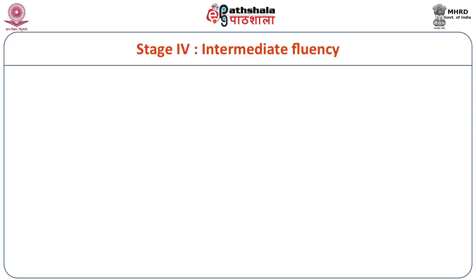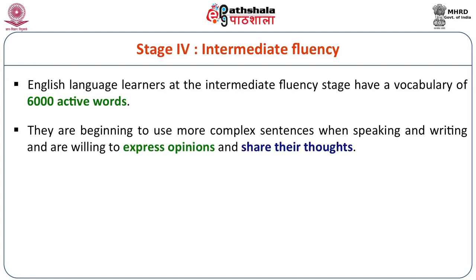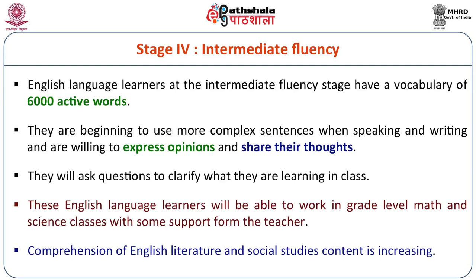Stage four is intermediate fluency. We judge any speaker on the parameters of fluency — how fluent the speaker is. English language learners at the intermediate fluency stage have a vocabulary of 6,000 active words. They are beginning to use more complex sentences when speaking and writing, are willing to express opinions and share their thoughts, and will ask questions to clarify what they are learning. At this level they have questions and doubts, they try and sometimes fail, but they are ready to clear those doubts and move toward proper fluency.